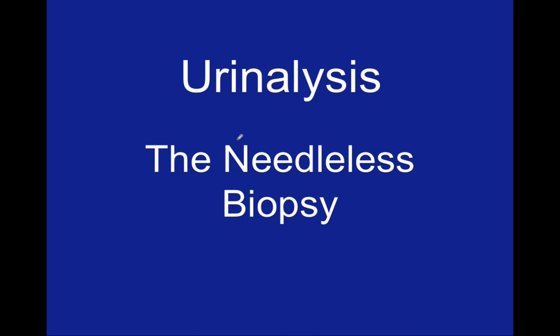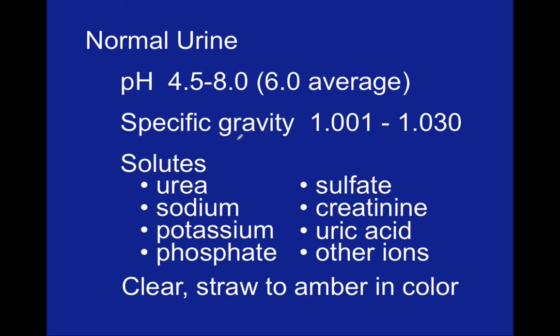The second portion of this lab presentation will discuss the concepts behind urinalysis. We can tell a lot about a person based on the contents of their urine. Differing concentrations of solutes in the urine can be indicators of differing conditions. Normal urine has a pH range between 4.5 and 8.0, but on average urine will be slightly acidic, ranging around 6. Certain solutes will normally be found in the urine, and other solutes will not. Based upon the presence or absence of these solutes, or the presence of abnormal solutes, we can make inferences about the general health of the body. Urea is one of the most common solutes found in the urine, as well as sodium, potassium, phosphate, sulfate, creatinine, and uric acid.